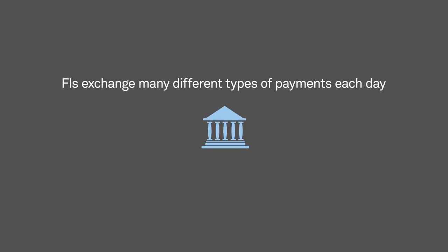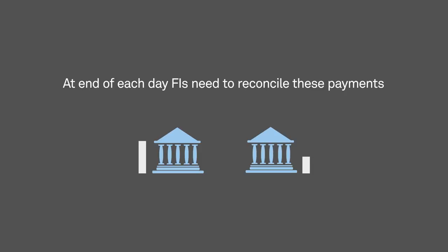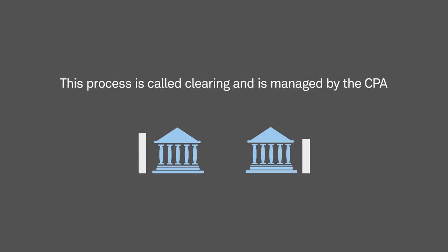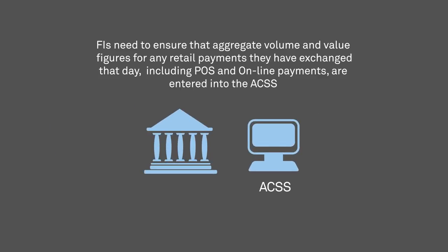FIs exchange many different types of payments each day. On average, some 25 million payment items, representing approximately $174.5 billion in transactions, were cleared and settled through the CPA's systems each business day during 2012. As each day's exchanges come to a close, FIs need to reconcile these payments and determine the amounts they owe each other — this process is called clearing, and it's managed by the CPA. Our systems calculate the total volume and value of inter-FI exchanges for all payment types and determine the amounts owing to and by each FI. FIs need to ensure that aggregate volume and value figures for retail payments exchanged with other FIs that day, including POS and online payments, are entered into the CPA's Automated Clearing Settlement System, the ACSS, for clearing.